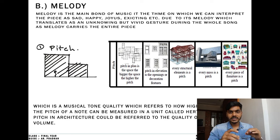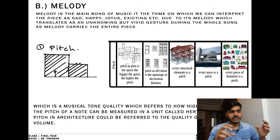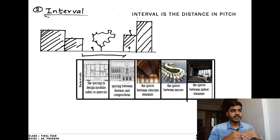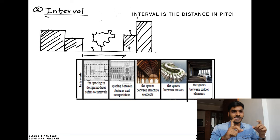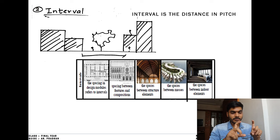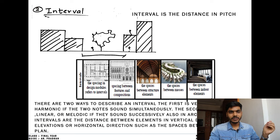As you can see, I've denoted some examples of pitch in architecture — it can be a larger or smaller space, it can be in elevation for windows, it can be structural elements. Every mass is a pitch. Interval is a very simple term — it is the distance in pitch or distance between two notes. In architecture, it can be a transitional space, space between two areas, space between two structures, or elements like columns between masses.